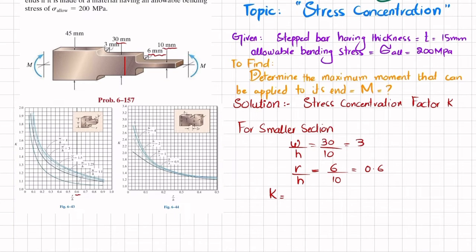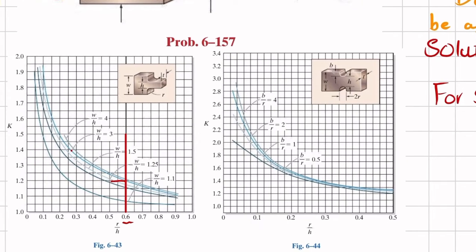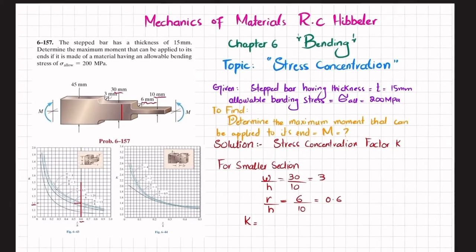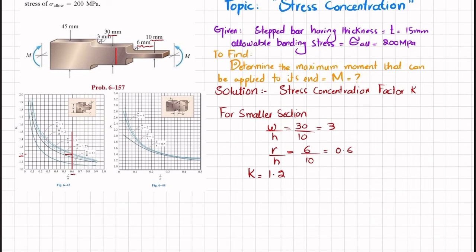Using the stress concentration factor chart: R/H = 0.6, draw a vertical line; W/H = 3, locate that curve. The two lines coincide at a point, and moving horizontally to the K axis gives K = 1.2 for the smaller section.